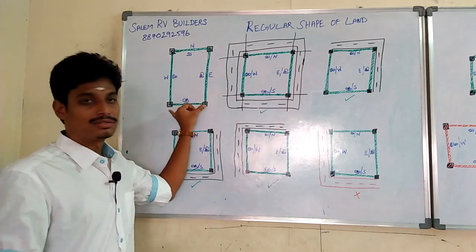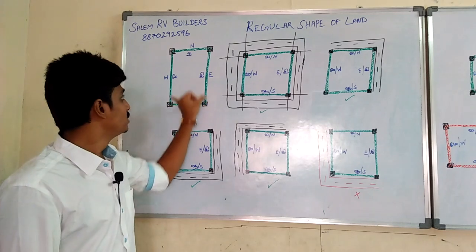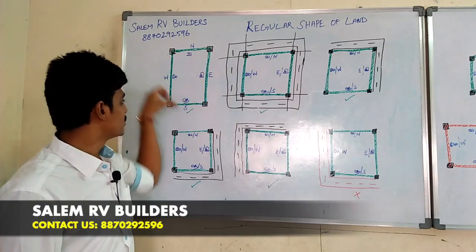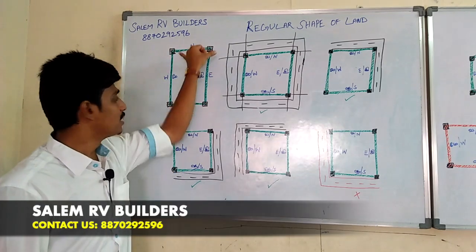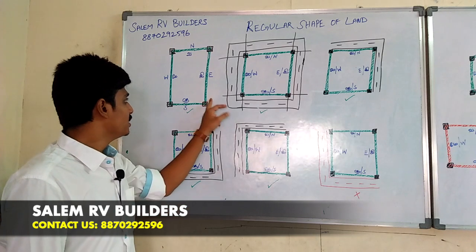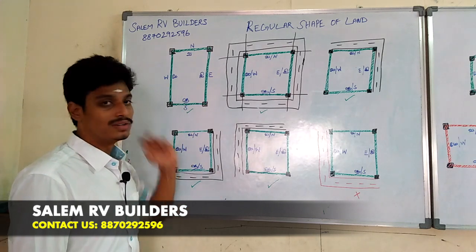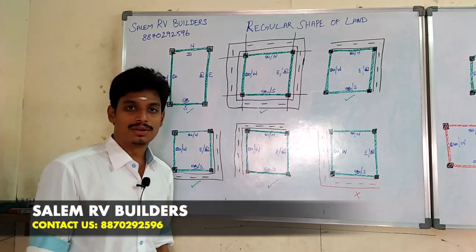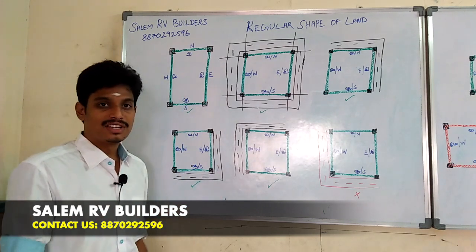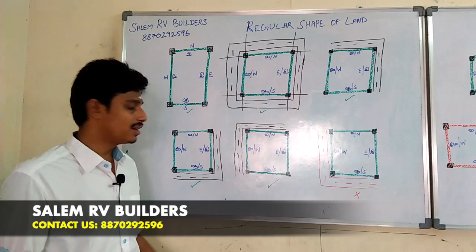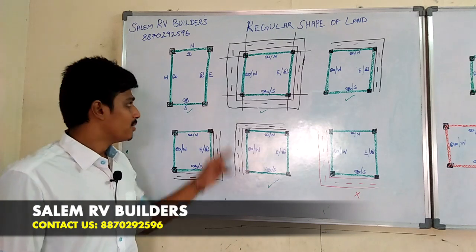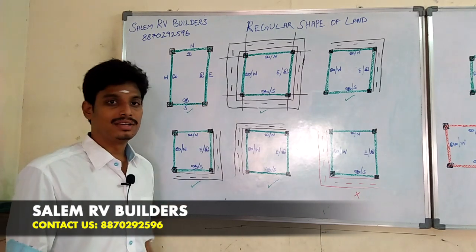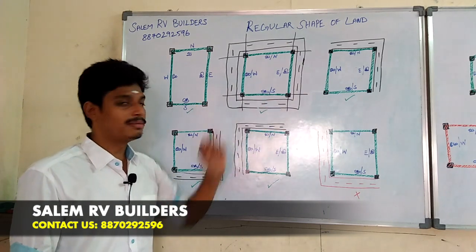If you look at the land, let's say South-North and East-West. South-North is one measurement, East-West is one measurement. If you look at the measurement, you can see the rectangle and square type.